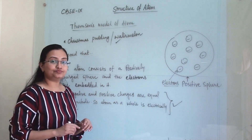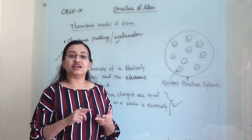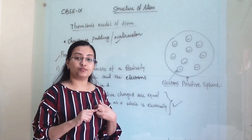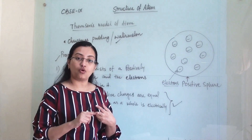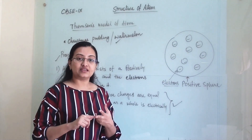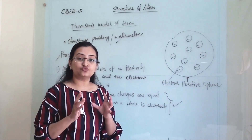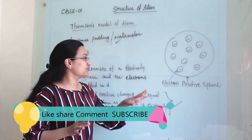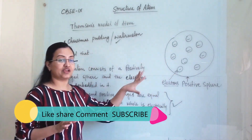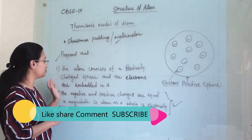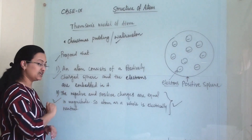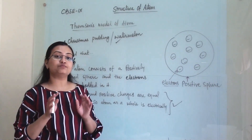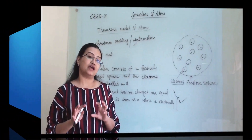In an exam, questions can come asking you to draw the structure of J.J. Thomson's proposed model, or to write the two points proposed by J.J. Thomson. So you need to remember both the structure and these two points about what he predicted about the atom.